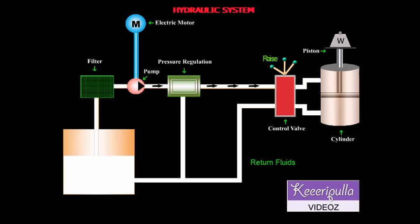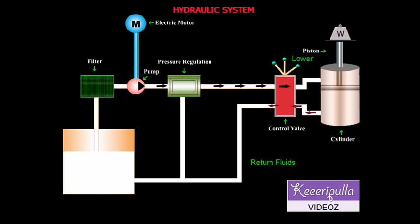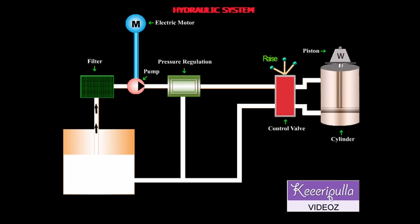To extend the cylinder, that is to lift the weight, the bottom port is connected to the pressure line and the top port is connected to the hydraulic tank. The piston now moves up and raises the load. The fluid on the other side of the piston is released to the hydraulic tank through the top port and control valve.